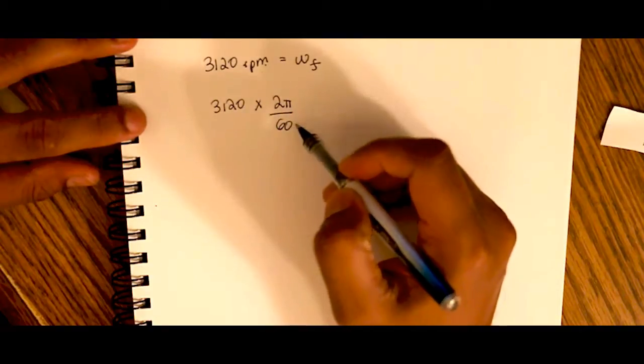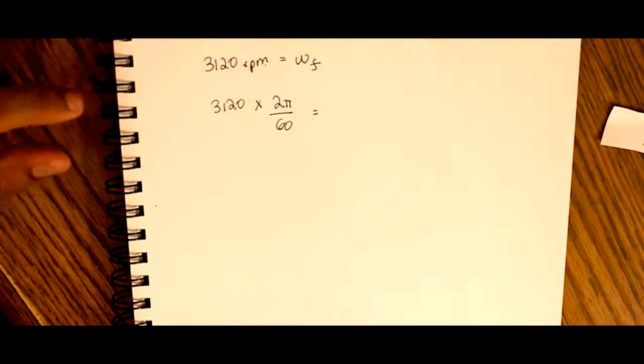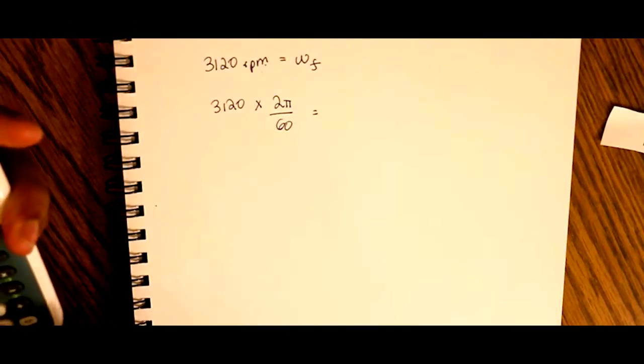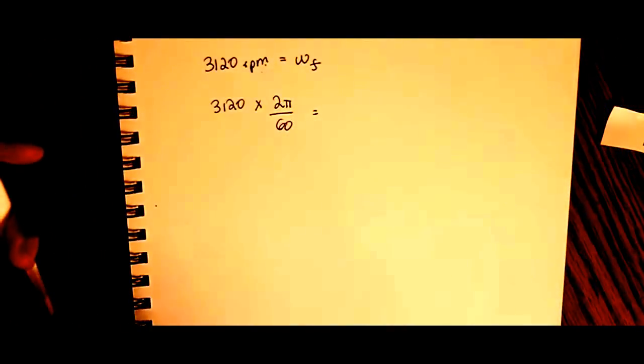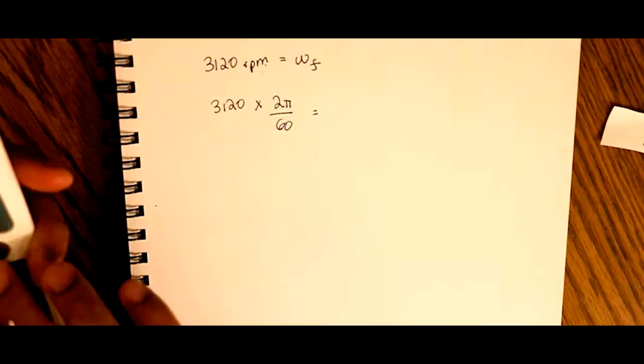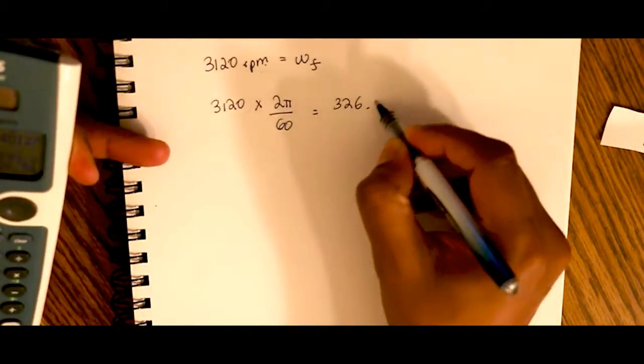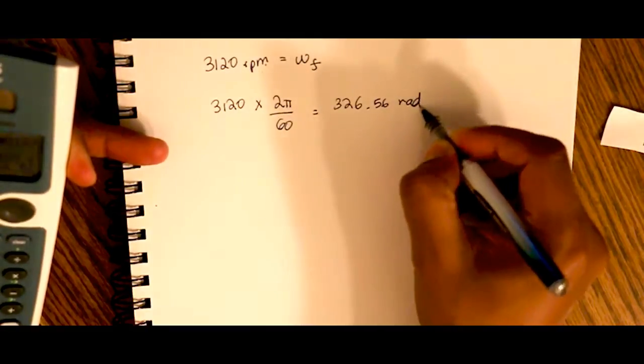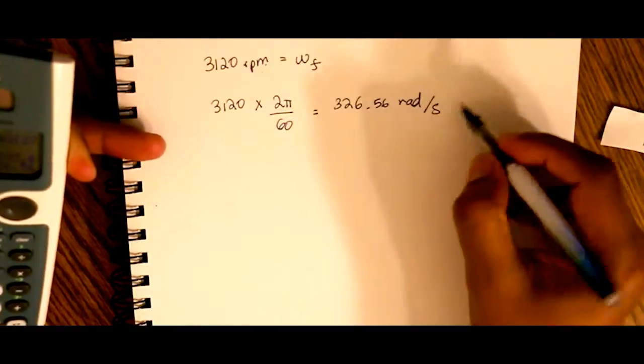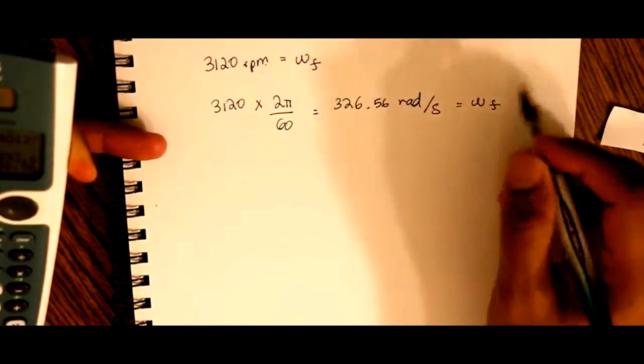This is in minutes, this is in seconds. What do we get? 326.56 radians per second. And that's our final angular velocity.